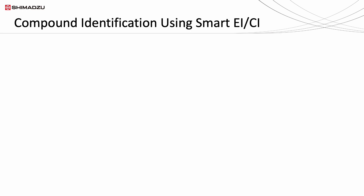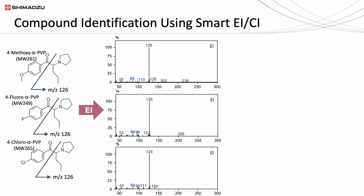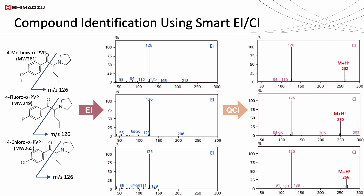When the derivatives of alpha-PVP are sent for EI mode analysis, all three derivatives show the same base peak of 126 in their mass spectra. However, the molecular ion information of these compounds is absent in EI mode. By switching to QCI mode in the smart IS, it allows the molecular ion information of these three compounds to be obtained, which will then allow the estimation of the methoxy and halogen substitutions.